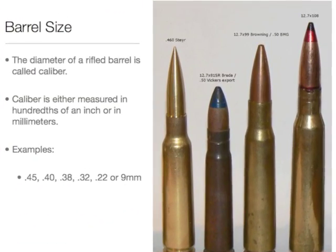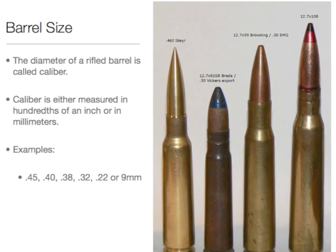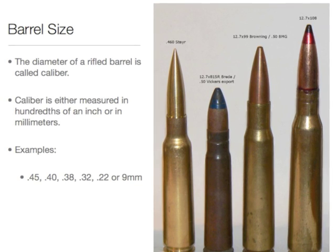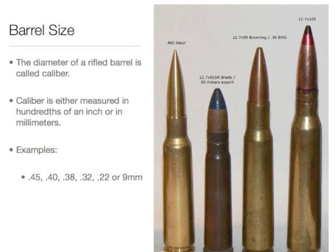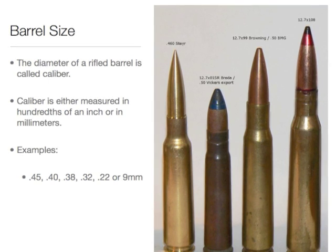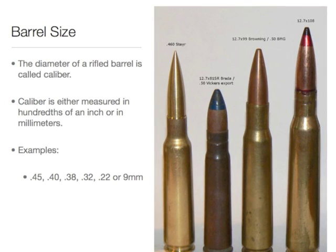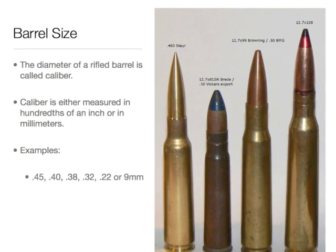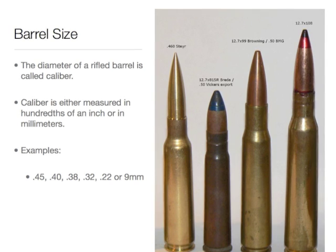The barrel size is measured in caliber. Calibers are measured in hundredths of an inch or in millimeters. Some examples are shown here on the right. Other examples are a .45, .38, .32, or .22, or a 9 millimeter. Here you see high-powered rifle shells, and those are .46 or a .50 caliber, which is .5 Vickers.